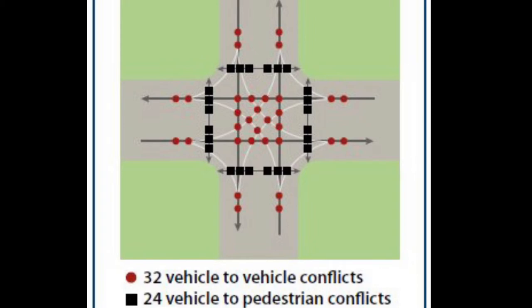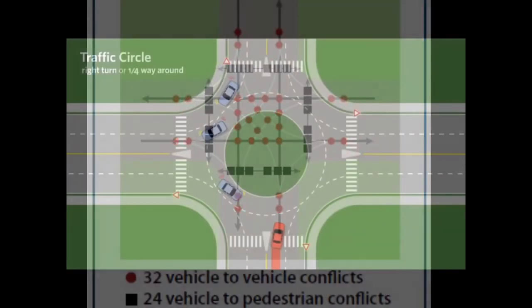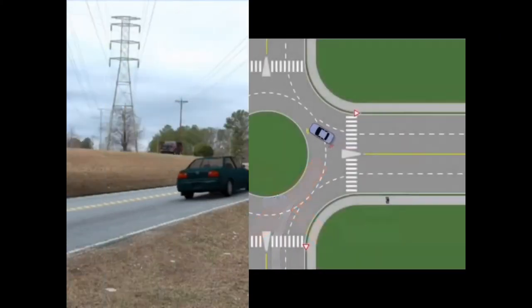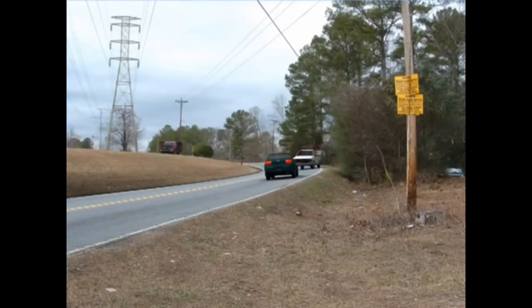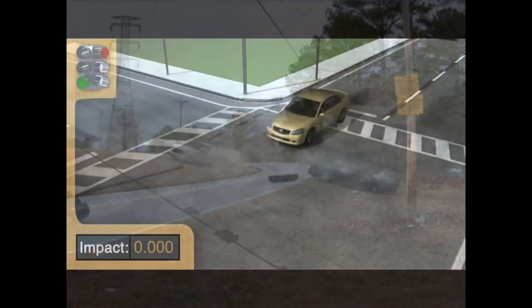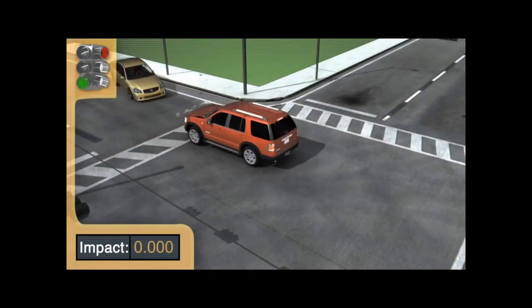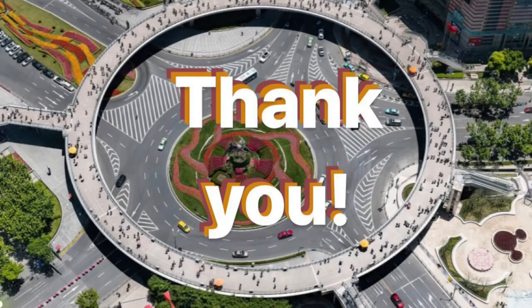Reduction of types of collisions is another advantage roundabouts offer. The geometry of roundabouts only allows merging collisions, while 4-way intersections also allow head-on collisions as well as T-bone collisions. Thanks for watching and we hope you learned something today.